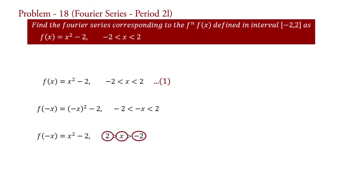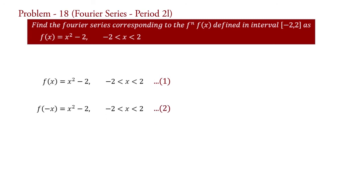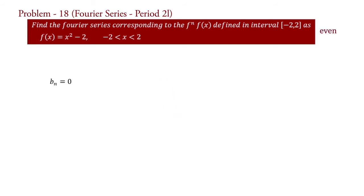We have changed the sign of all the quantities and sign of the inequalities of the interval. Now inverting the order of interval, f of minus x equal to x square minus 2 for minus 2 less than x less than 2, say equation 2. It is found from equation 1 and 2 that we get the same expression of the function with same interval, that is f of x equal to f of minus x for minus 2 less than x less than 2. Therefore f of x is even and hence coefficient b_n equal to 0.